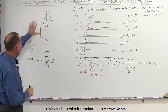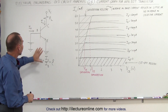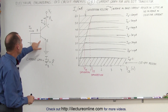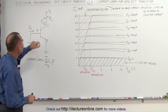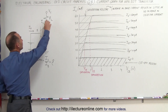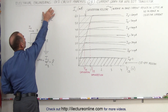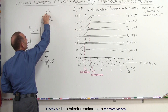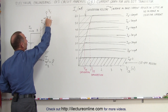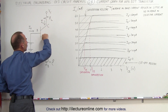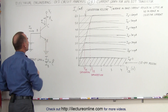We have here a basic circuitry of an NPN BJT transistor. We have the voltage at the collector, we have a load on the collector, and we drive current through the load to the transistor and to the emitter.